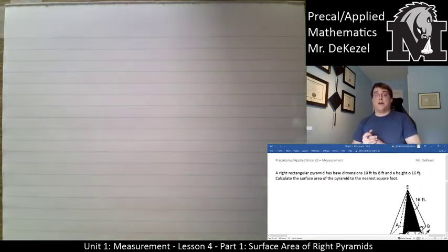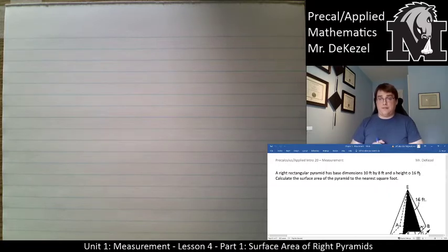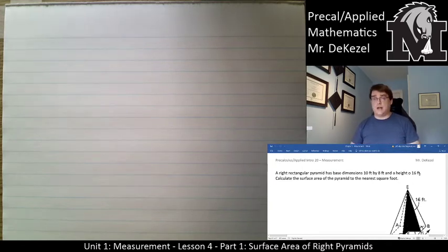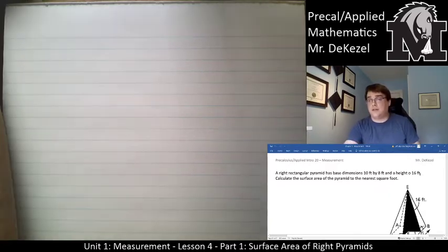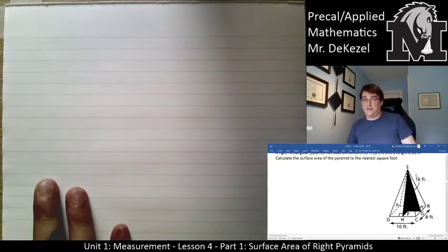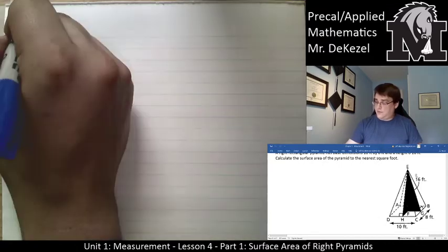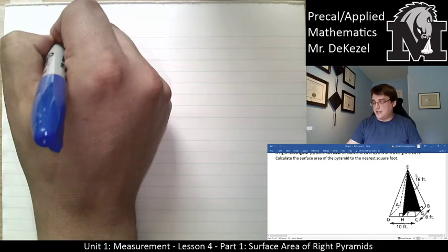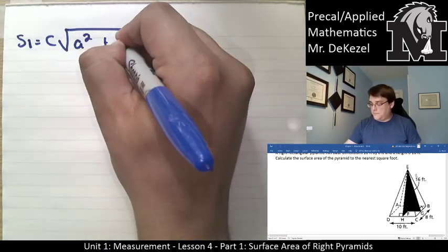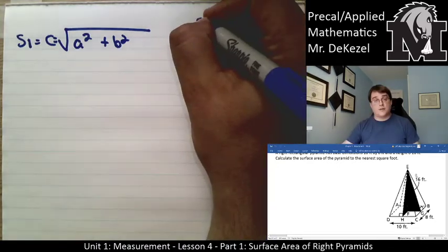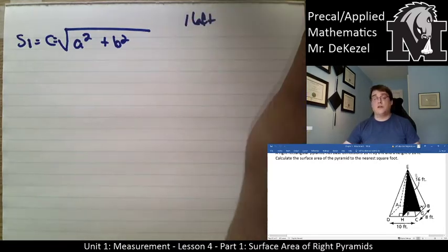A right rectangular pyramid has base dimensions 10 feet by 8 feet and a height of 16 feet. This is not a regular pyramid — it has two different slant heights that we'll need to calculate, which can get a little tricky to keep track of. The first slant height uses the 16-foot pyramid height and half of the 8-foot side, which is 4 feet.